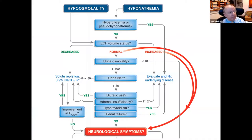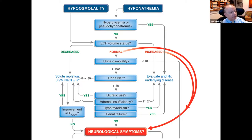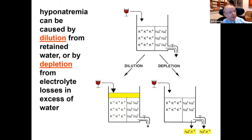The diagnostic algorithm for hyponatremia begins by ruling out hyperglycemia and pseudohyponatremia from elevated lipids or protein. The real first step is determining extracellular fluid volume status, because pathways and treatments differ for hypovolemic, euvolemic, and hypervolemic patients. Hypervolemic patients with ascites, edema, and fluid overload are usually clear. The distinction between hypovolemic and euvolemic is more difficult, as patients may not manifest classic hypovolemia symptoms unless depletion is severe.